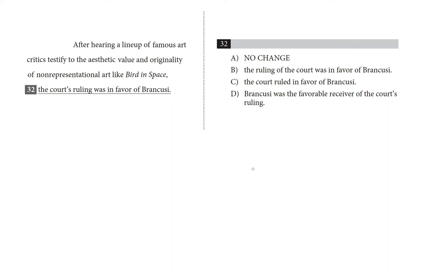Now let's do it together. 'After hearing a lineup of famous art critics' — who heard the lineup of art critics? That's the target of this modifier. Choice A, no change: this is saying that the court's ruling heard the lineup, and that doesn't make sense. A ruling is an opinion that a judge issues — it's not a person and it's definitely not something with ears. In a way, this choice is as illogical as a thunder bunny or a fish in a raincoat.